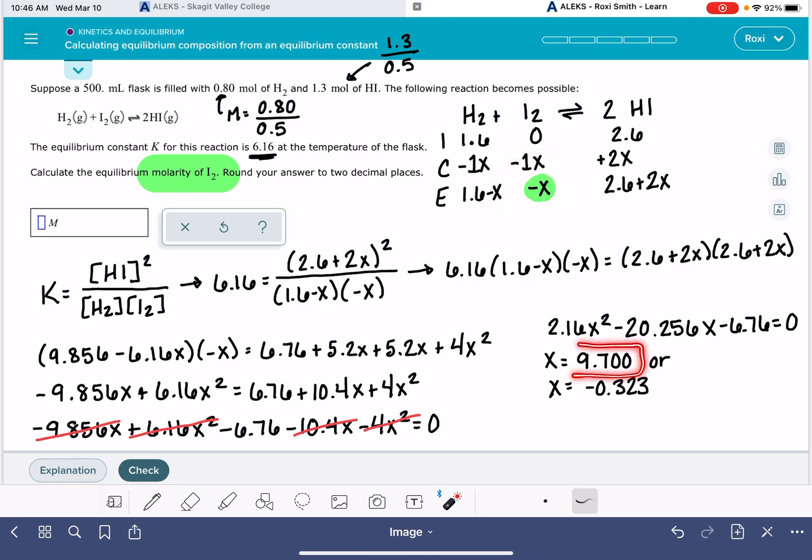If we start with this, because this one would be the absolute easiest one for us to plug into. If we plug 9.70 into this term right here, that would give us the I2 concentration is negative X. So in this case, it would be negative 9.700. And it's impossible to have a negative molarity. You cannot do that. So that means that this possible solution is absolutely incorrect. This is the correct solution. And this is the one that we want to plug in.